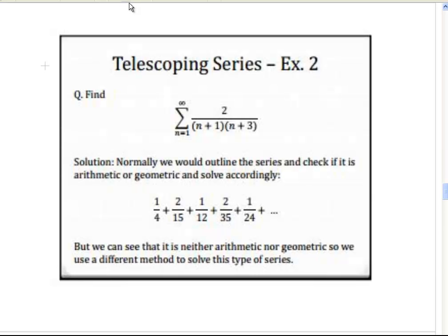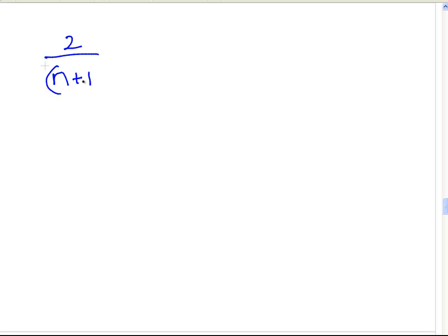Now we look at the second example: find the summation of 2 over n plus 1 times n plus 3. Working it out term by term, the first term is 1/4, the second term is 2/15, the third term is 1/12, and the fourth term is 2/35, and so on. Again, this is neither arithmetic nor geometric, so we're going to use the same approach.